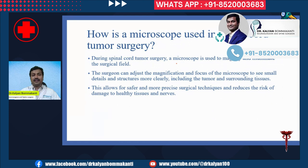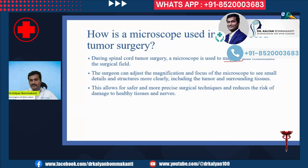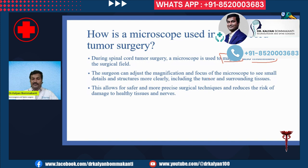How is a microscope used in spinal cord tumor surgery? A microscope mainly performs two functions: it magnifies and illuminates the surgical field. With magnification, the surgeon can adjust the focus to see small details and structures more clearly, including the tumor and surrounding tissues. This allows for safer and more precise surgical techniques, reducing the risk of damage to healthy tissues and nerves.